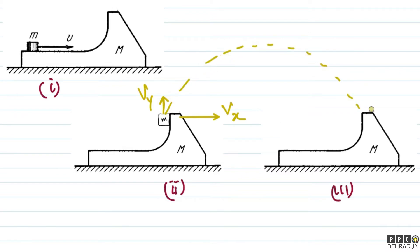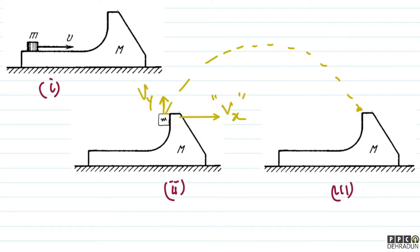Another important property of this projectile motion is: at the moment of break-off, capital M's velocity was vx and small m's velocity in x-direction was also vx. So in whatever time small m reaches a certain position, capital M also reaches the same x-position. This means small m will always be found directly above capital M — it appears as if both are moving together along the x-direction.